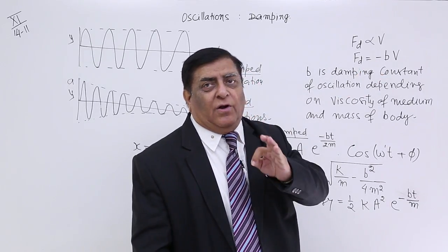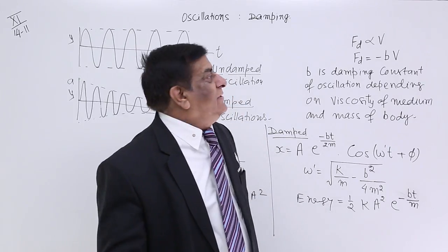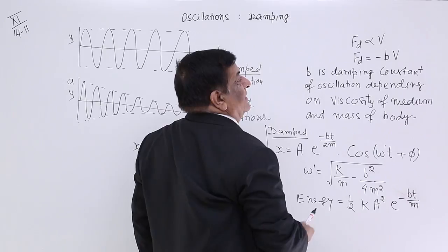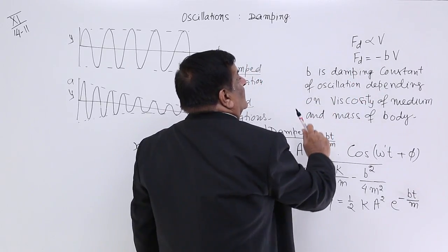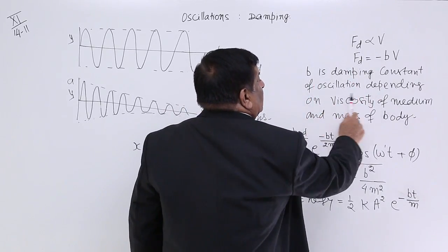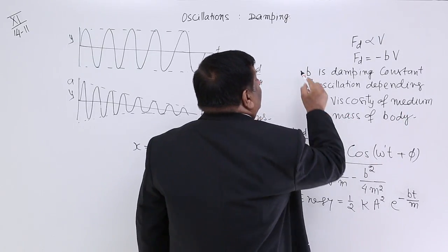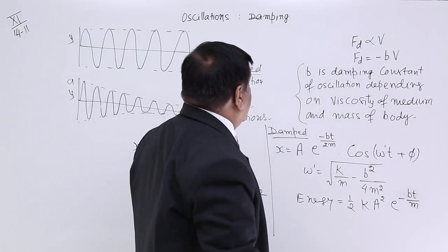This constant is damping constant of that particular oscillation. And this is a positive quantity. So, we make it minus here. That shows that force of damping is always opposite to velocity. That's why this minus here. So, what is B? B we will call damping constant.